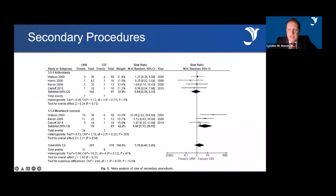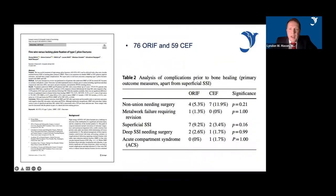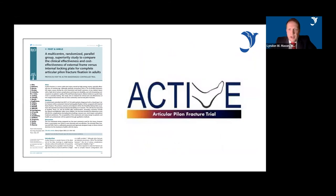A further paper including studies from our unit looked at 76 ORIF and 59 circular frame cases. Circular frames were used typically for open injuries or more severe injuries. In closed injuries specifically, there was no significant difference between the groups on any factors. There is currently an active randomised controlled trial looking specifically at the difference between circular frames and ORIF, and we are currently contributing to this.